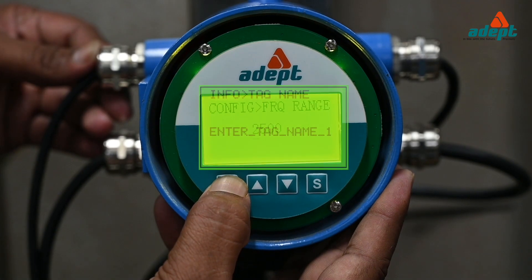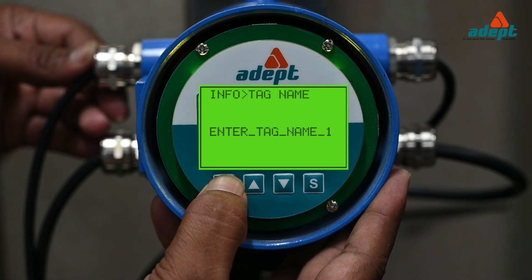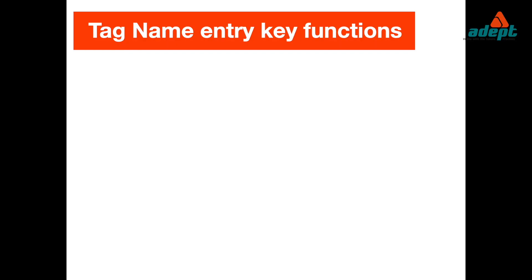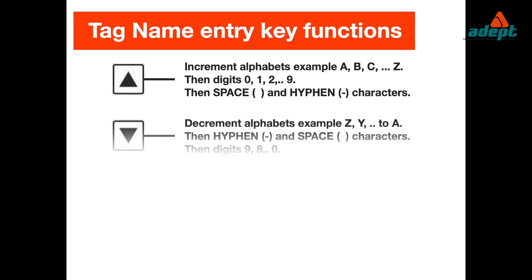You can set the tag name of up to 16 characters length. Tag name entry key functions: Up arrow key increments alphabets, for example A, B, C up to Z, then digits 0, 1, 2 up to 9, then space and hyphen characters.